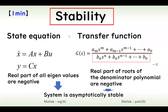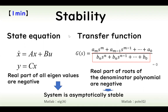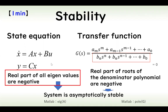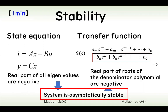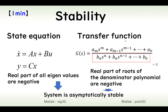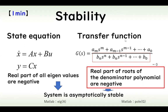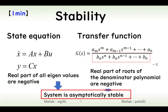In control engineering, stability is one of the most important topics. For the state equation, if the real part of all eigenvalues of A are negative, then the system is asymptotically stable. In the case of a transfer function, if the real part of the roots of the denominator polynomial are negative, then the system is asymptotically stable.